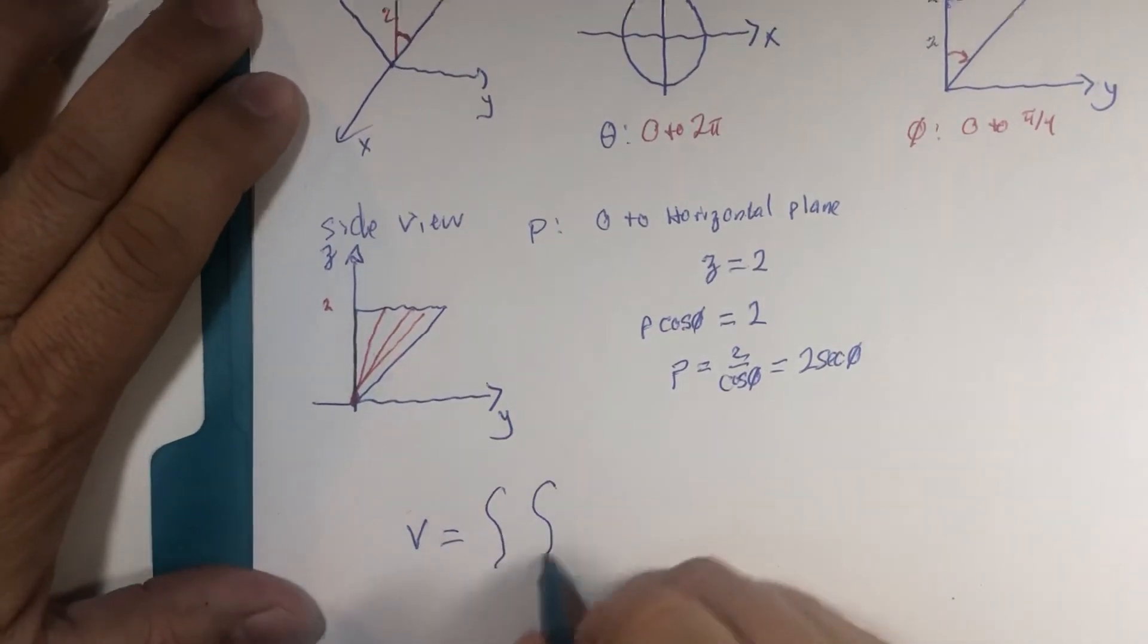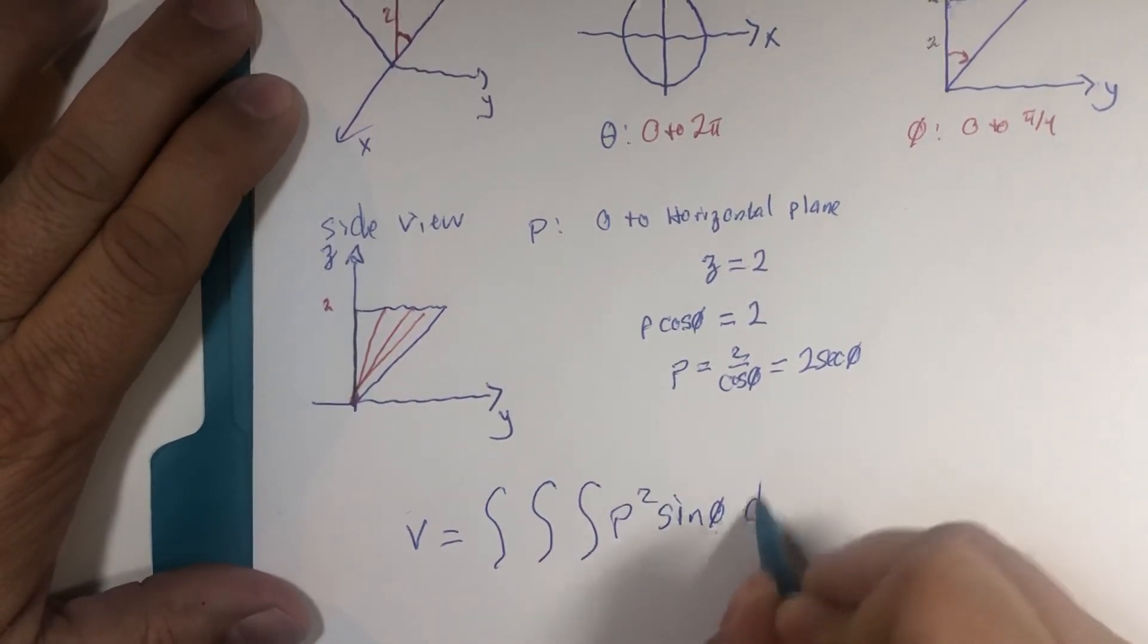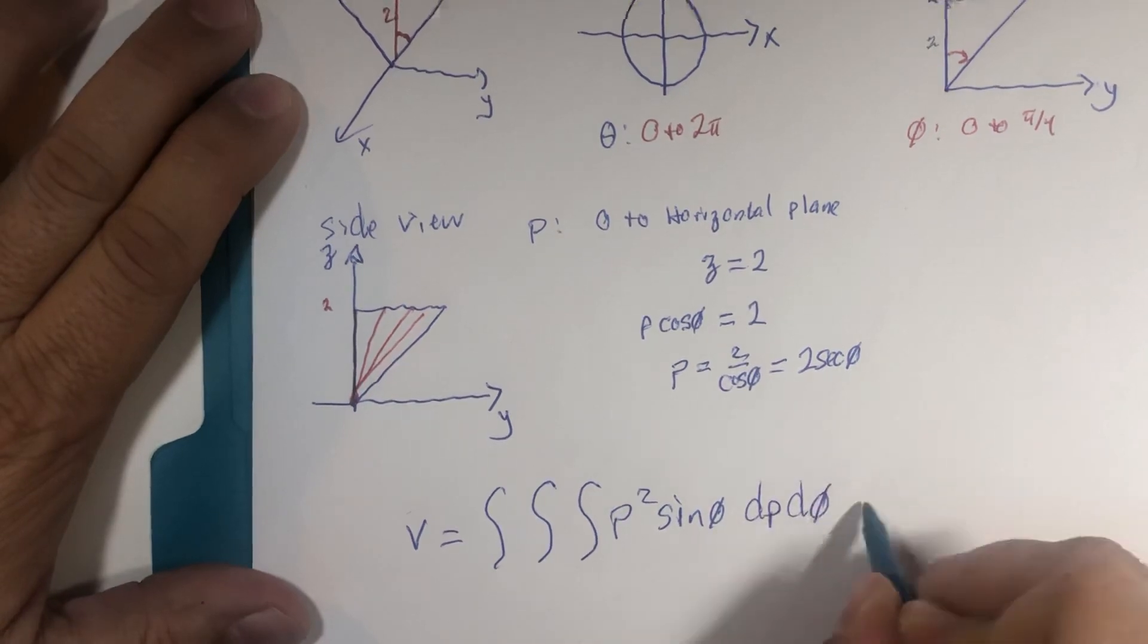So our volume of 1, 2, 3 triple integral, ρ² sin(φ) dρ dφ dθ, where theta goes from 0 to 2π,